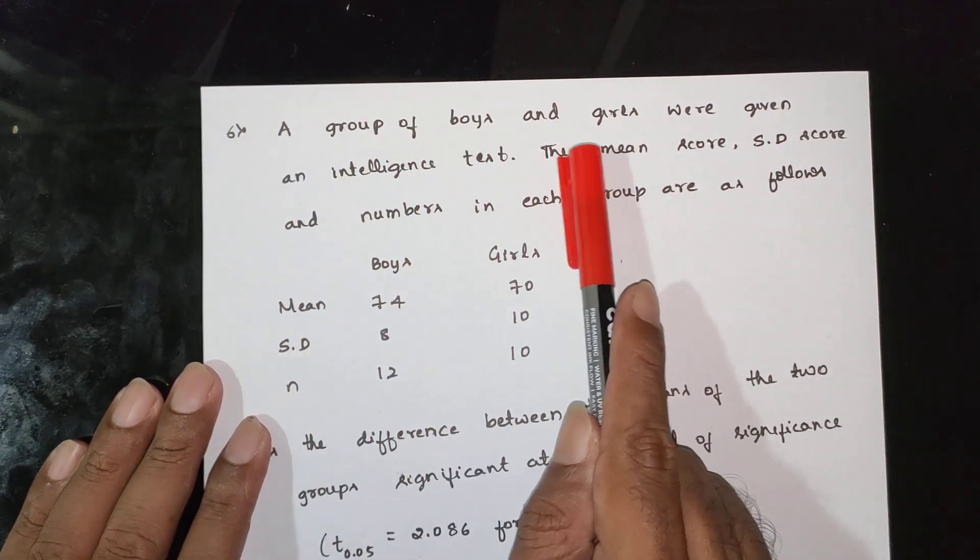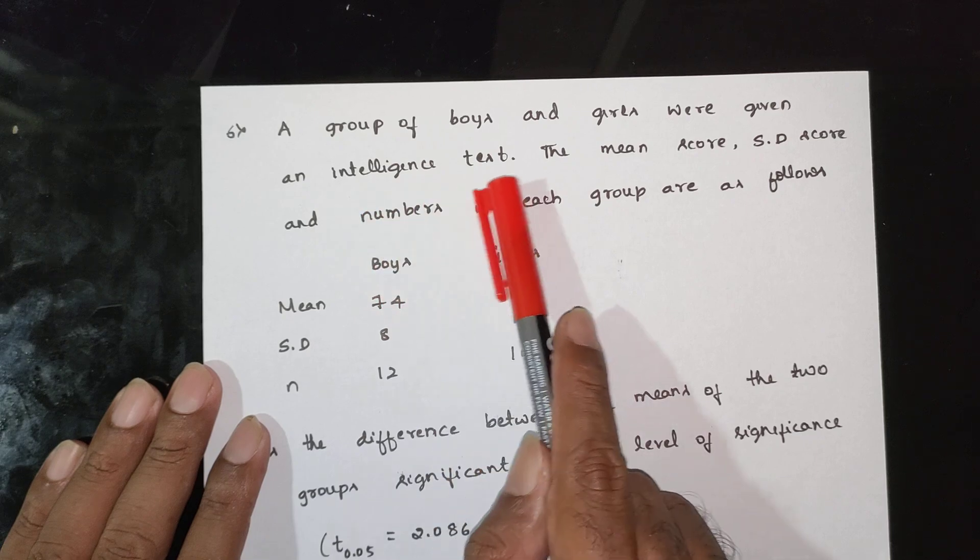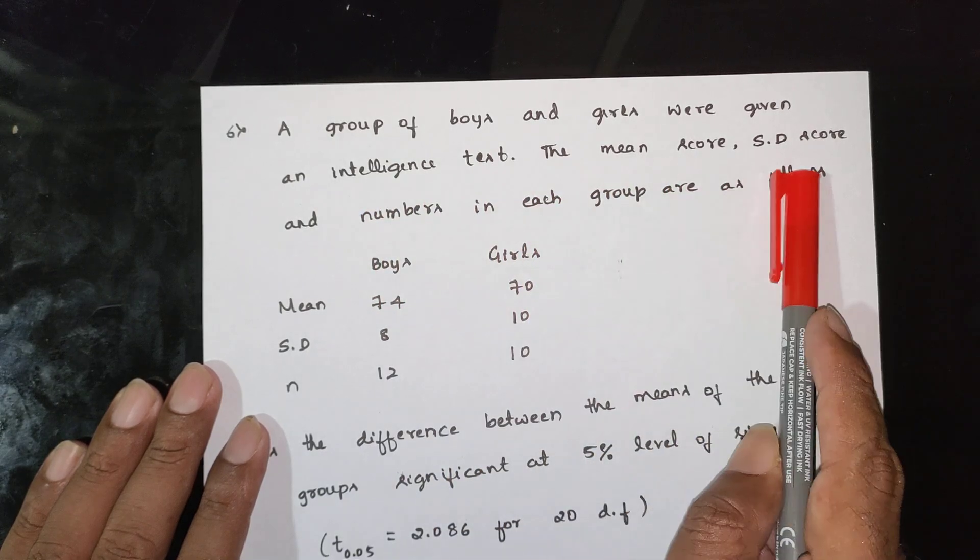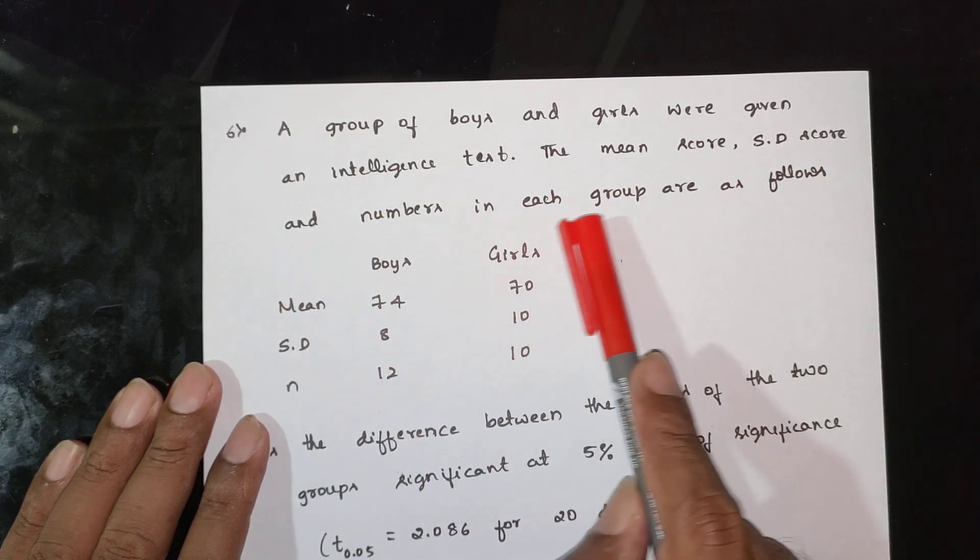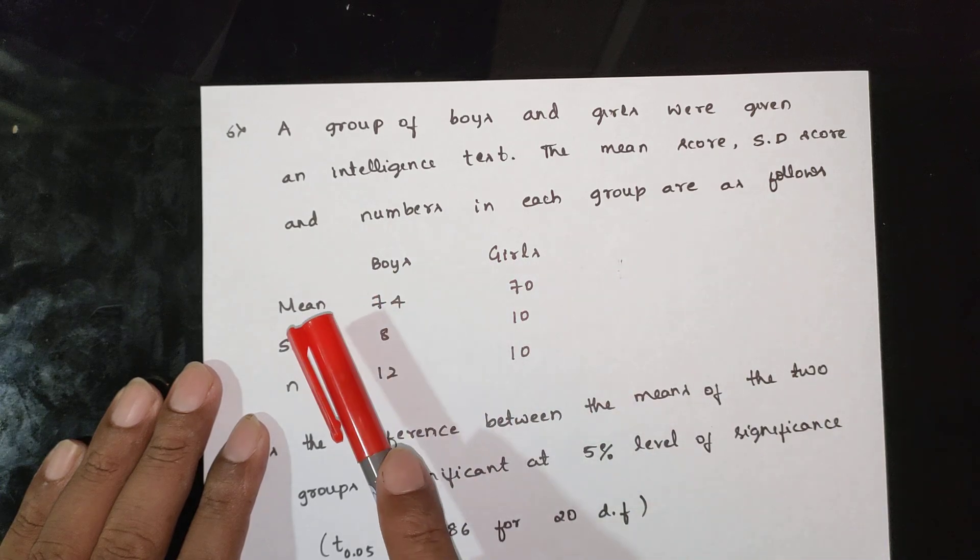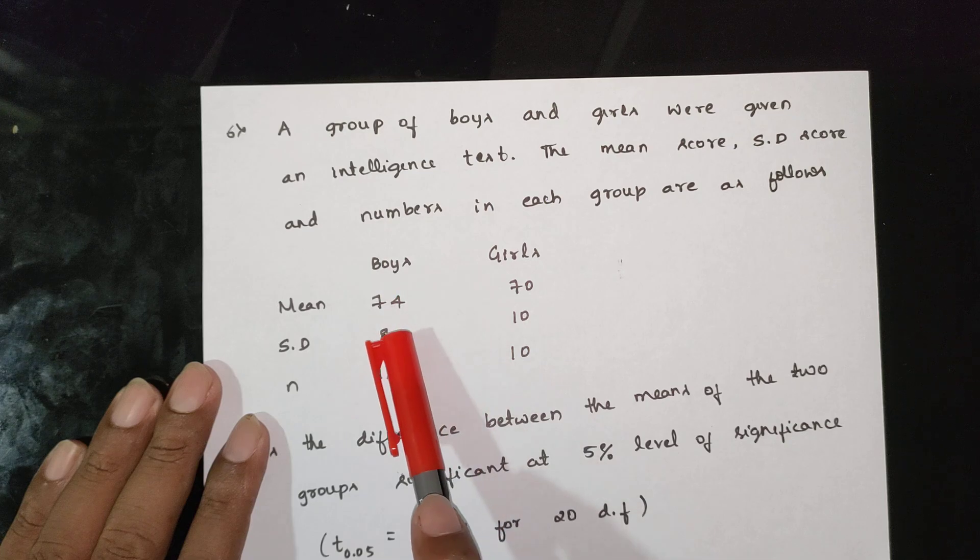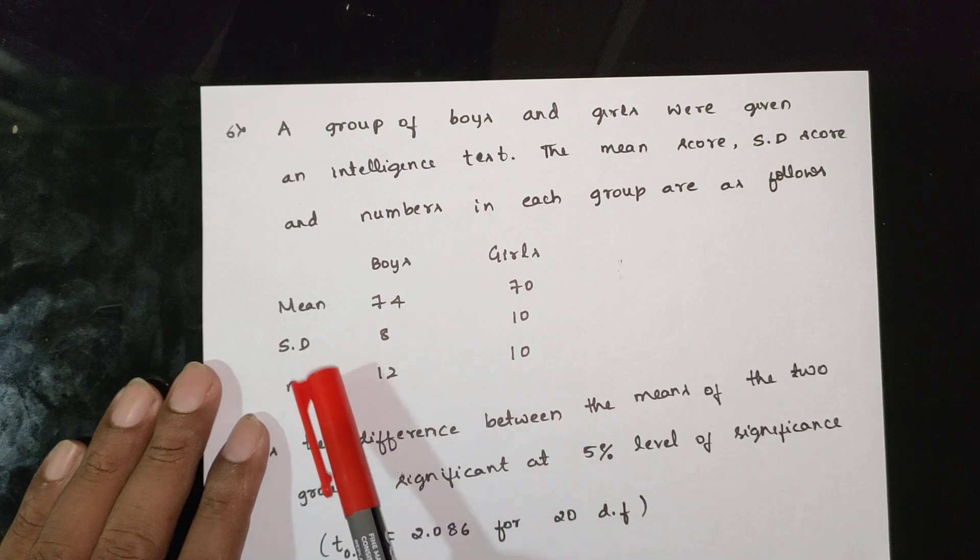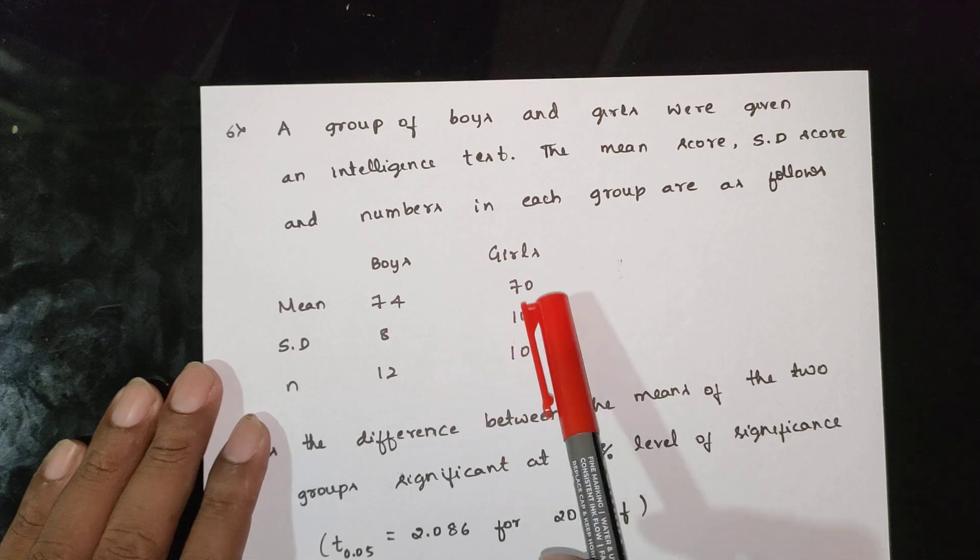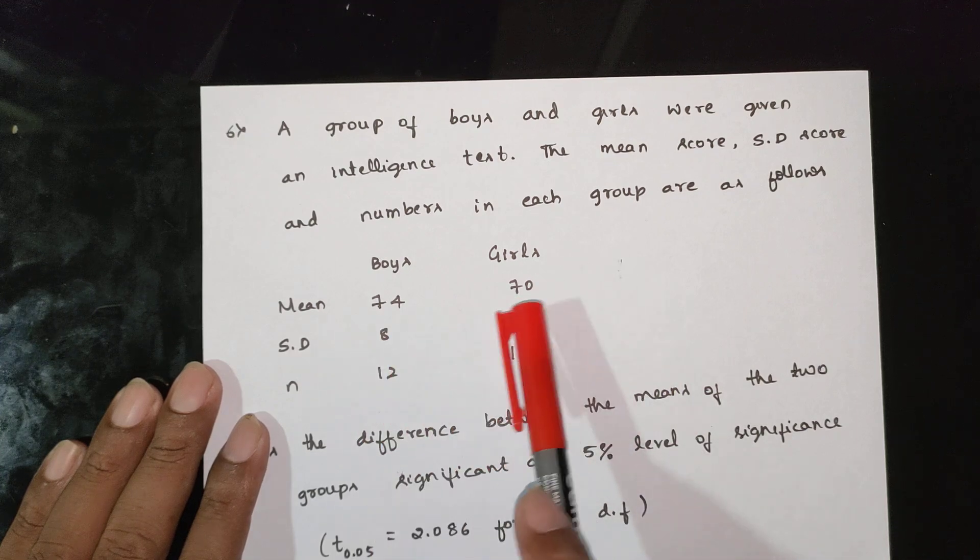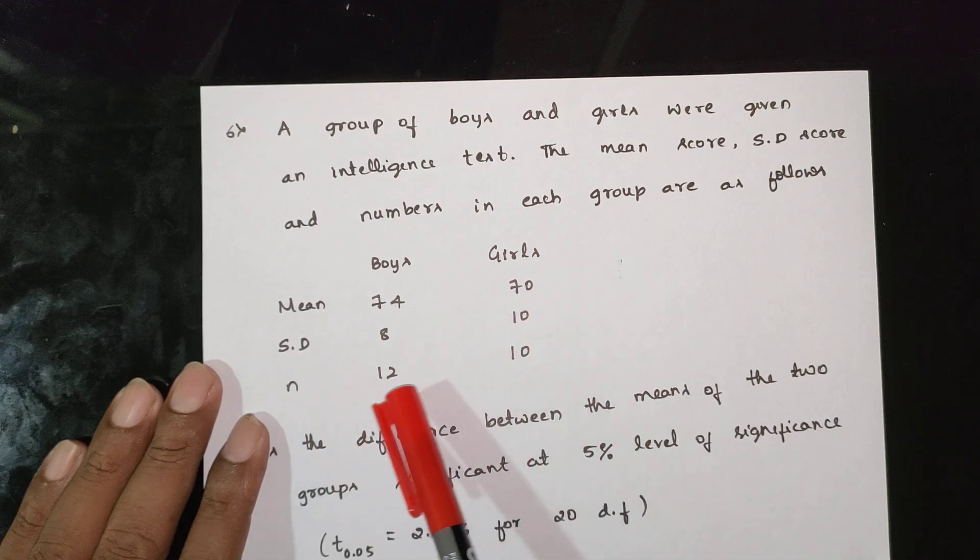A group of boys and girls were given an intelligence test. The mean score, standard deviation score, and numbers in each group are as follows. Boys: mean 74, standard deviation 8, n=12. Girls: mean 70, standard deviation 10, n=10.